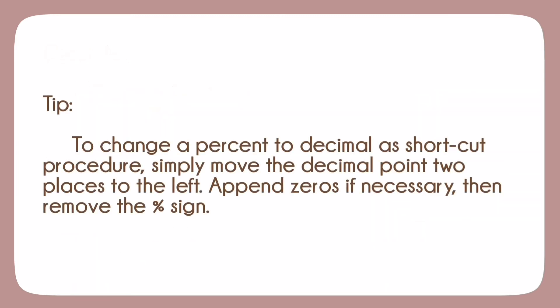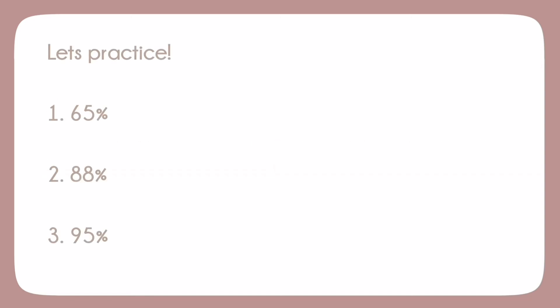Tip. To change a percent to decimal as shortcut procedure, simply move the decimal point two places to the left. Put zero before the decimal point if necessary, then remove the percent sign. Now let's try. You can pause the video if needed.